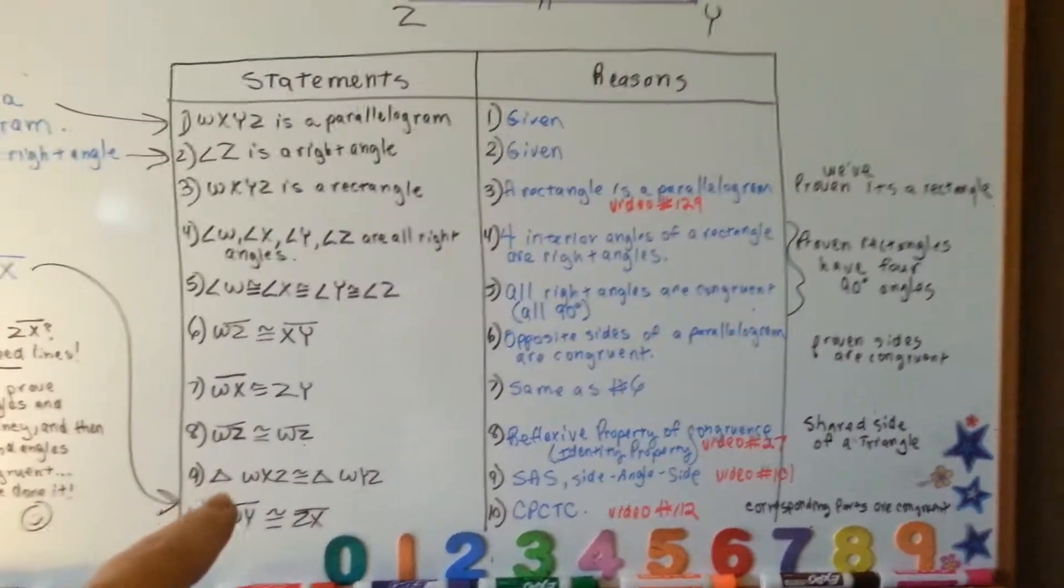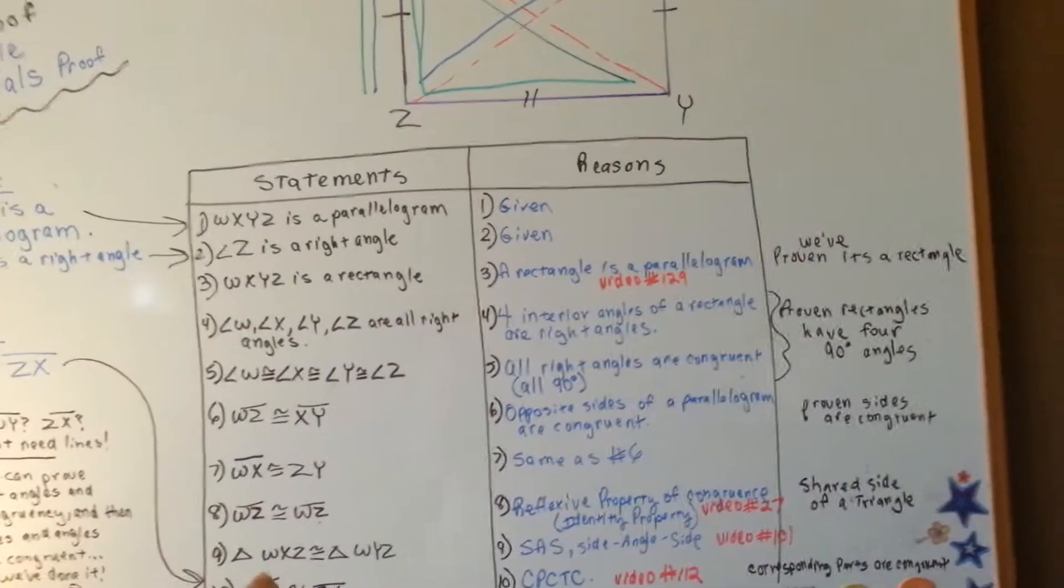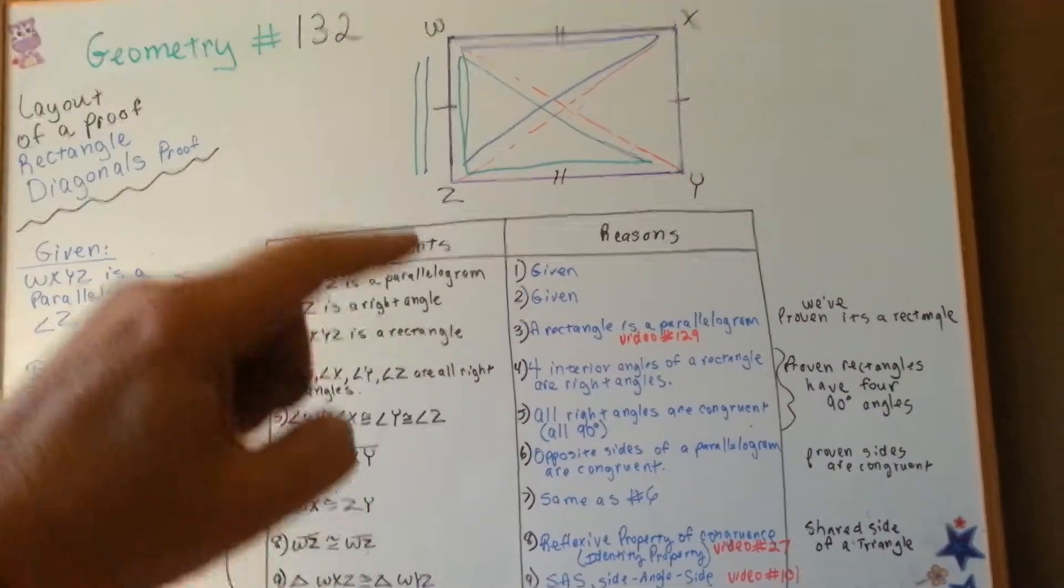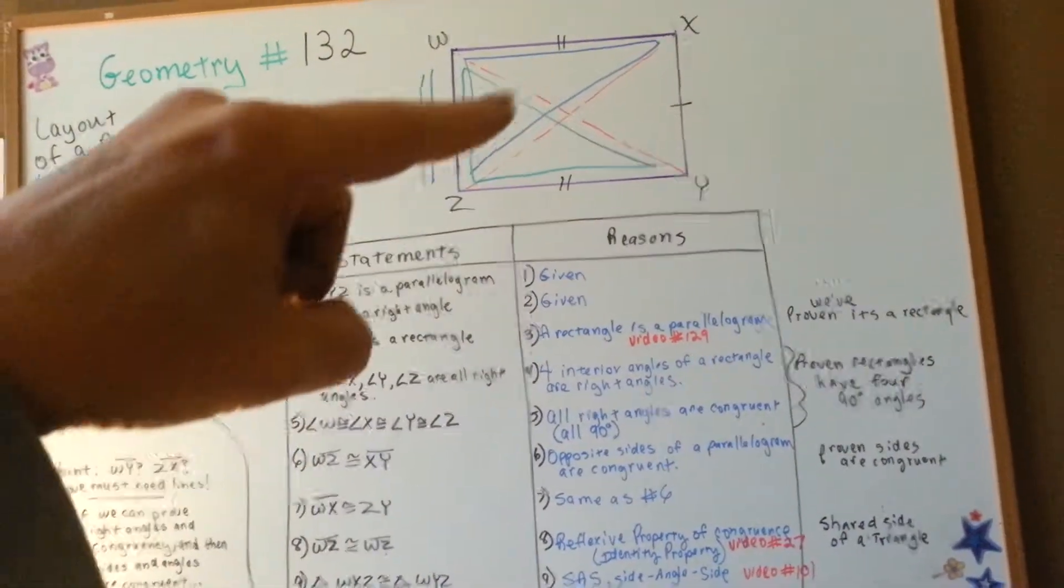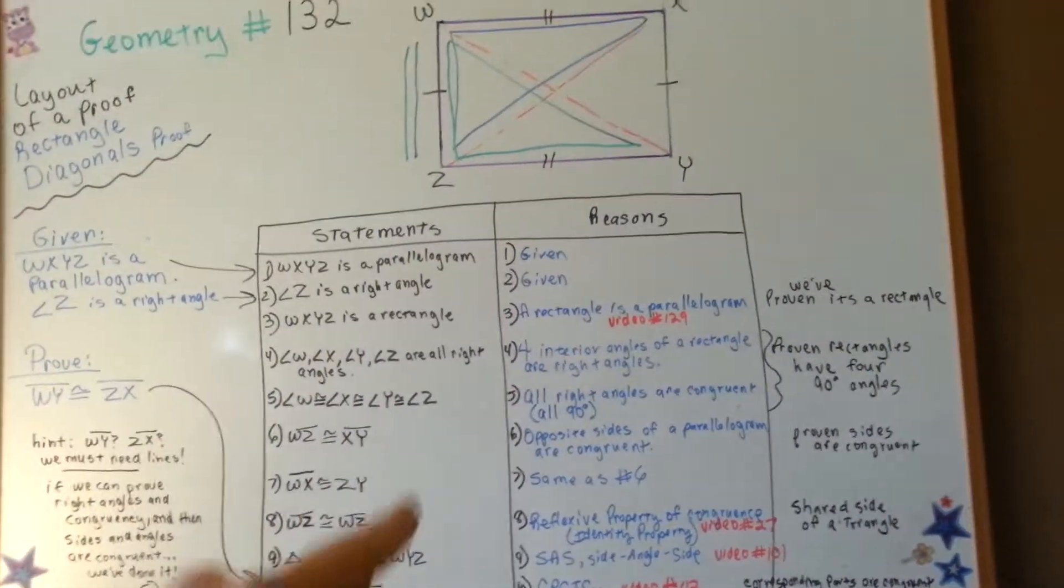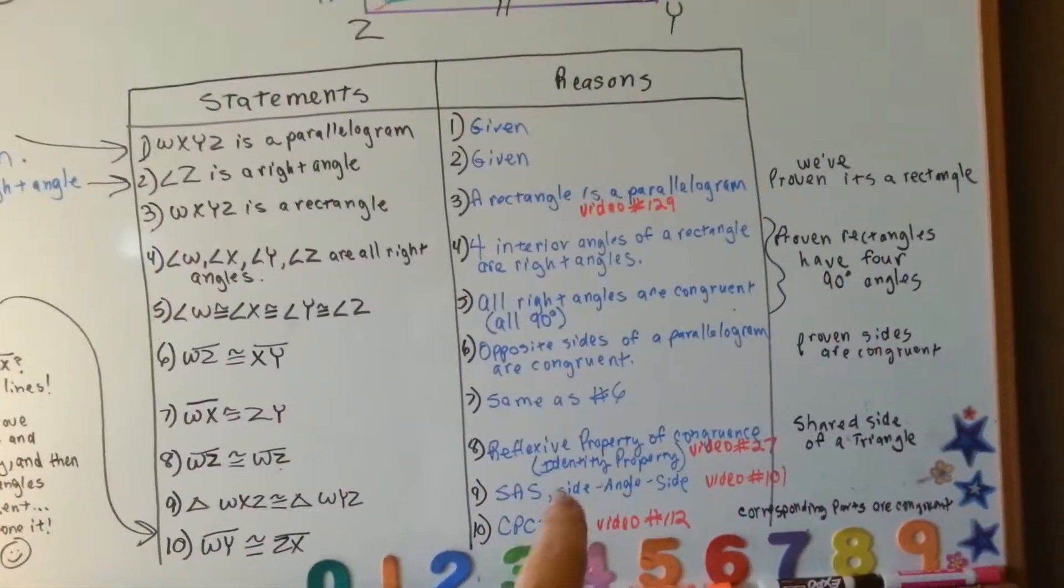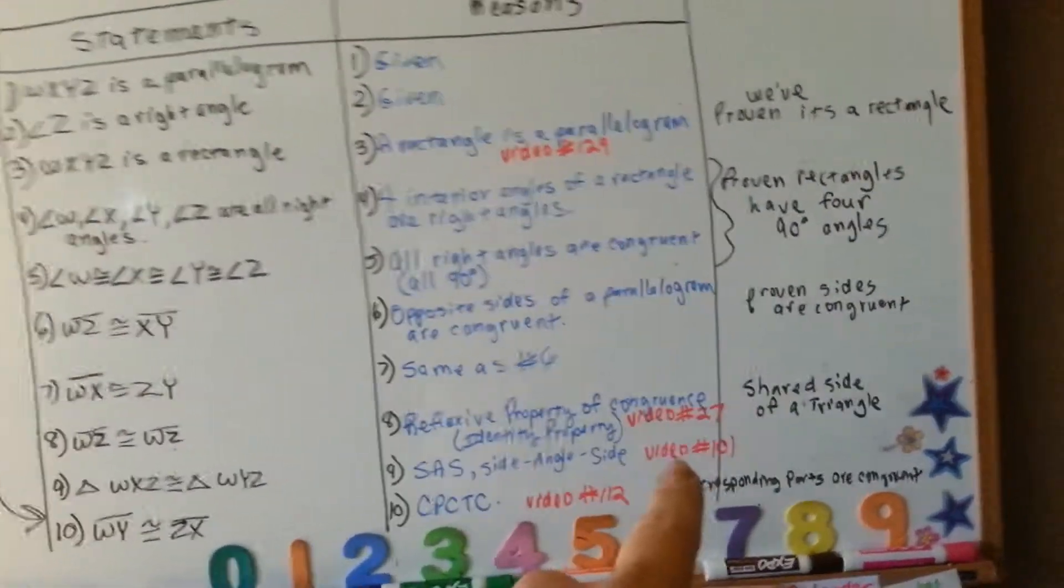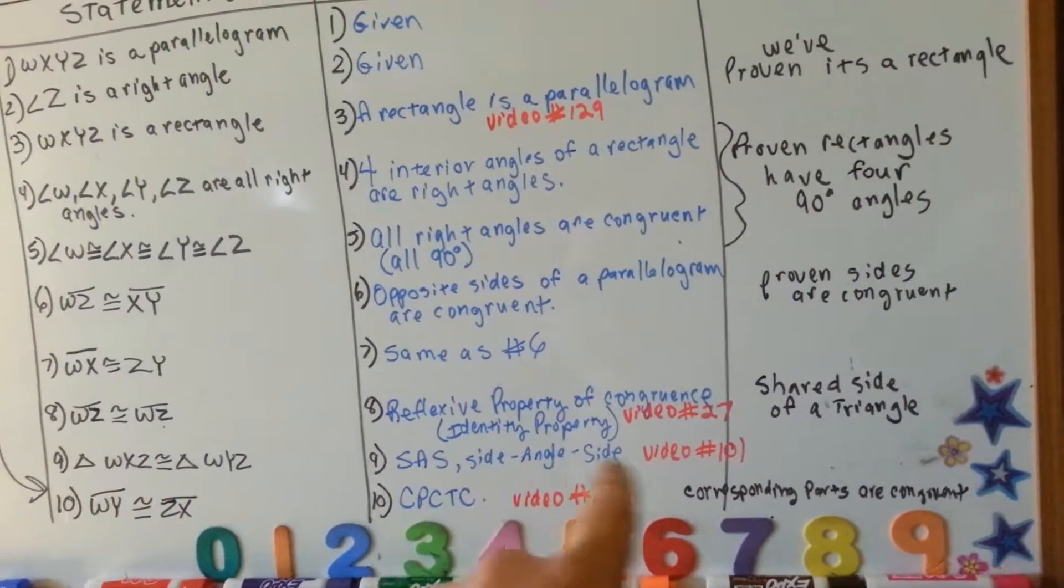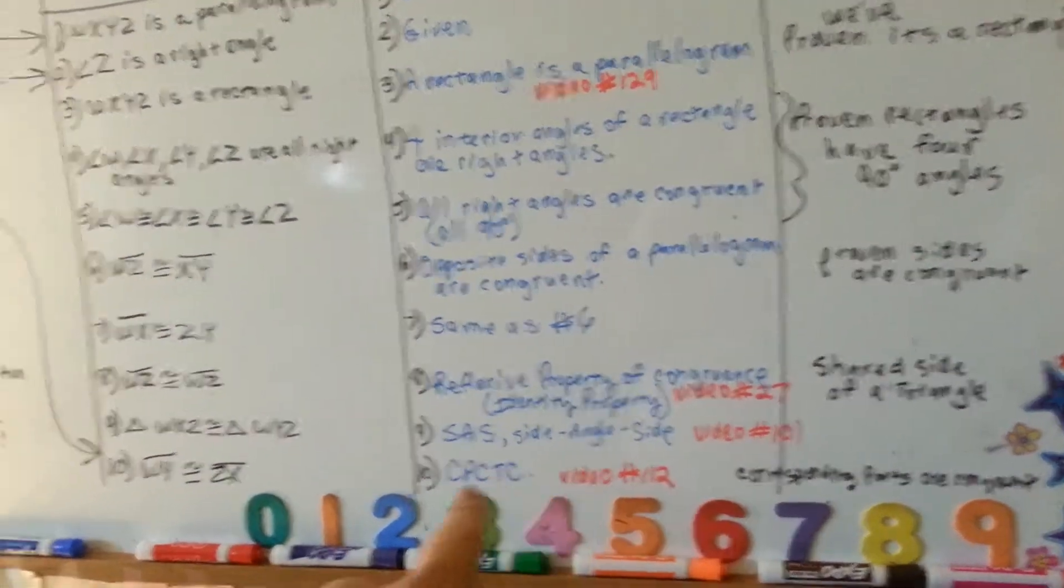We can say that triangle WXZ, alright, WXZ, this blue one, is congruent to the green one, WYZ. And our reasoning is side angle side. And you can watch that more, if you don't understand that, that's in video number 101. Now, because we were able to say side angle side for the reason,